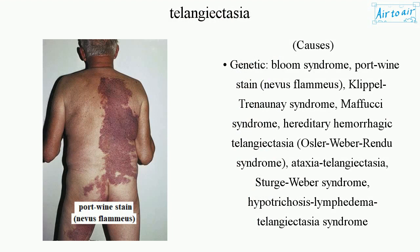Causes — Genetic: Bloom syndrome, Port-Wine stain (Nevus flammeus), Klippel-Trénaunay syndrome, Maffucci syndrome, Hereditary hemorrhagic telangiectasia, Osler-Weber-Rendu syndrome, Ataxia telangiectasia, Sturge-Weber syndrome, Hypotrichosis-lymphedema telangiectasia syndrome.